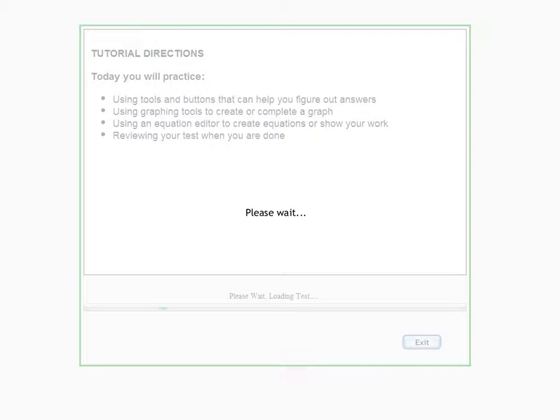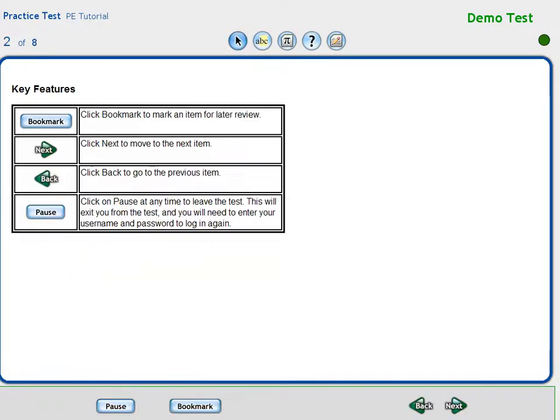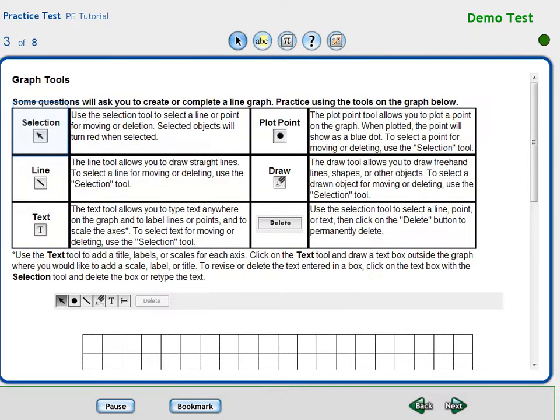Teachers and students may log into the practice test on any computer that has the secure browser iTester. The tools in iTester are always the same. The selection tool will allow the user to move and delete items on the graph. The point tool will allow the user to place points on the graph. The line tool will allow the user to draw line segments on the graph. The draw tool will allow the user to draw freehand on the graph.